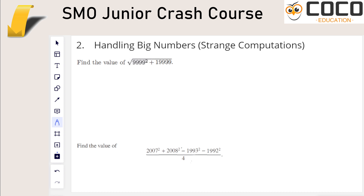Continuing on the theme of big numbers, one of the fun things about SMO problems is that you don't necessarily have to understand why it turns out to be a nice number. One option whenever you encounter a question like this is to always find a pattern. If 9999 squared plus 19999 is supposed to have a nice square root, I don't see why four 9's is so important — it probably works with one or two 9's. So why not try the small cases first, which you can calculate?